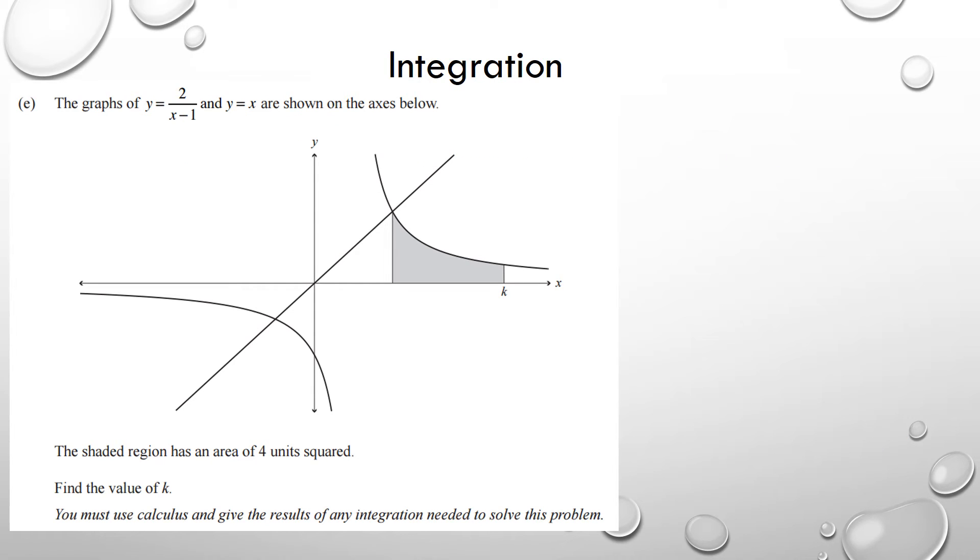All right, so with the integration question, we've got two graphs that are shown below in the axis. What they're telling you is the first part that you need to know is the shaded region has an area of four units squared. Okay, so that part is four, find the value of k.